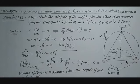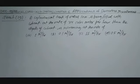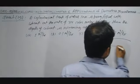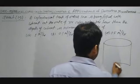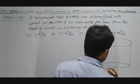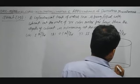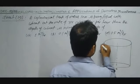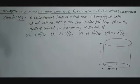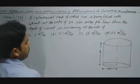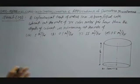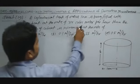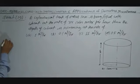Now, question number 19 of chapter 6 miscellaneous: A cylindrical tank of radius 10 meters is being filled with water at the rate of 314 cubic meters per hour. The volume of the cylinder is V = πr²h.